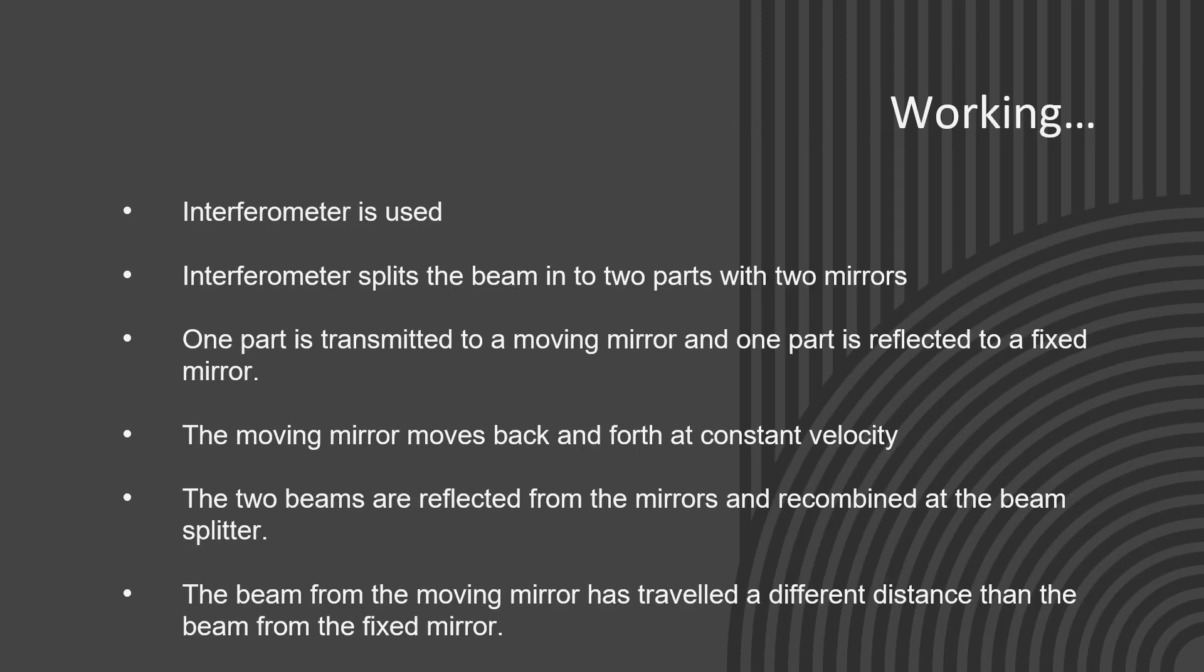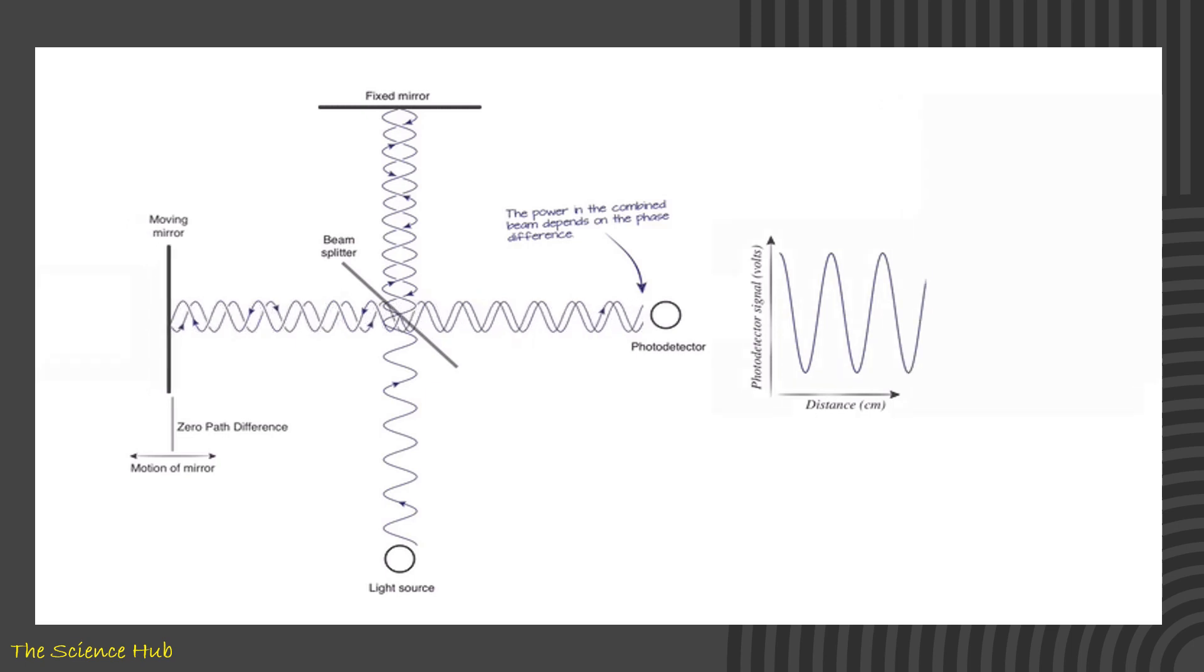Now how FTIR is working: interferometer is used in this spectroscopy. Interferometer splits the beam into two parts with two mirrors. One part is transmitted to a moving mirror and one part is reflected to a fixed mirror. The moving mirror moves back and forth at constant velocity. The two beams are reflected from the mirrors and recombined at the beam splitter. The beam from the moving mirror has traveled a different distance than the beam from fixed mirror. Here you can observe whatever we discussed—how that constructive and destructive phenomena will take place and according to that how data interpretation will take place.